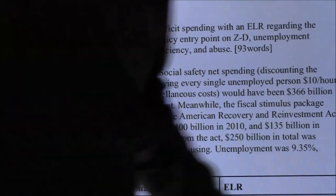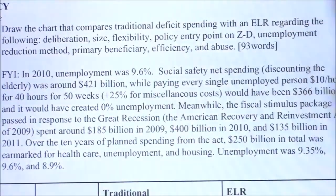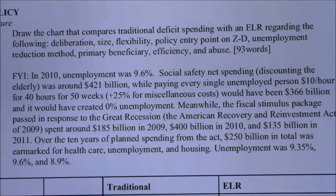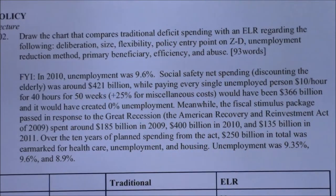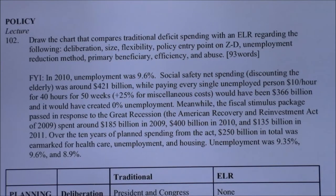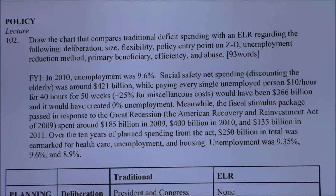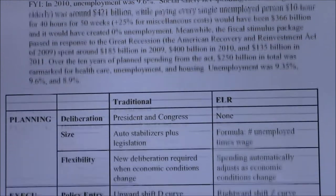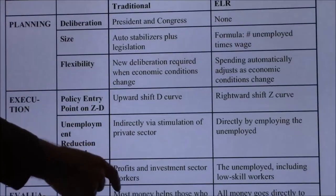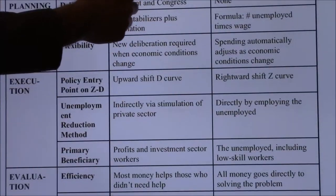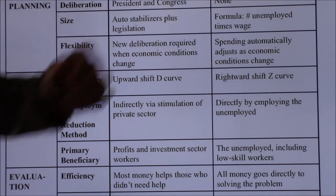Oh look at that, it's doing that thing again where it keeps zooming in. Okay, there we go. We just did 102 where it was a comparison of the way we do deficit spending right now in this column and the way that the post-Keynesian approach is suggesting that we do it instead, and obviously they are arguing that is superior on the far right.